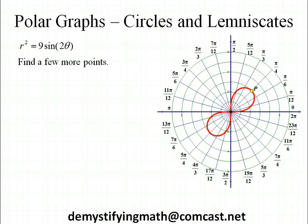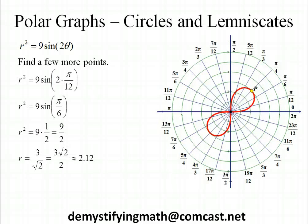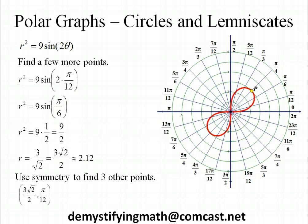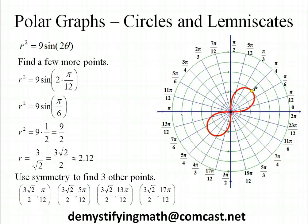To find a few more points, I chose pi over 12 and ended up with 3 square roots of 2 over 2. We can use symmetry to find other points. Taking pi over 12 and flipping it along the line theta equal pi over 4 gives a complementary angle of 5 pi over 12, which has the same radius length. Taking those two points and rotating them into quadrant 3 gives two more points with the same radius length. So pi over 12, 5 pi over 12, 13 pi over 12, and 17 pi over 12 all have the same radius length of 3 square roots of 2 over 2.